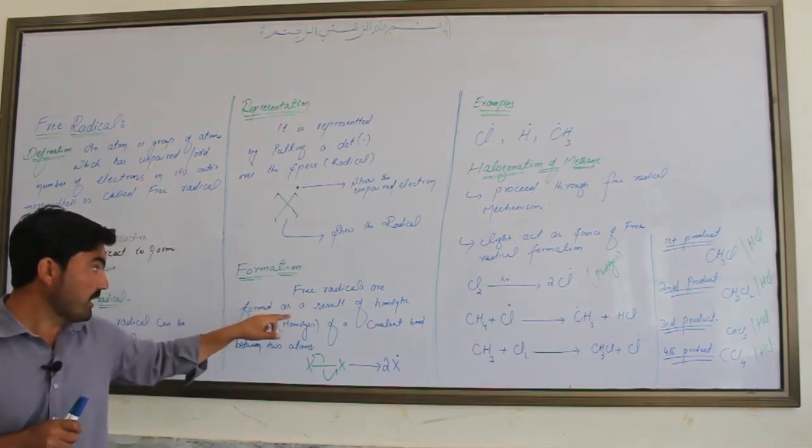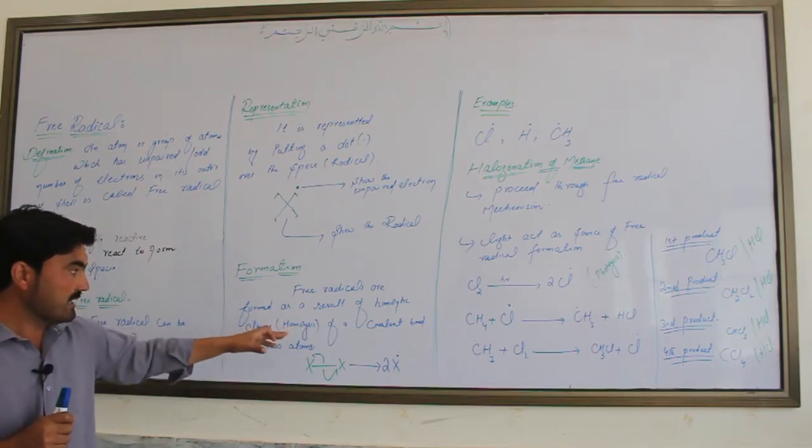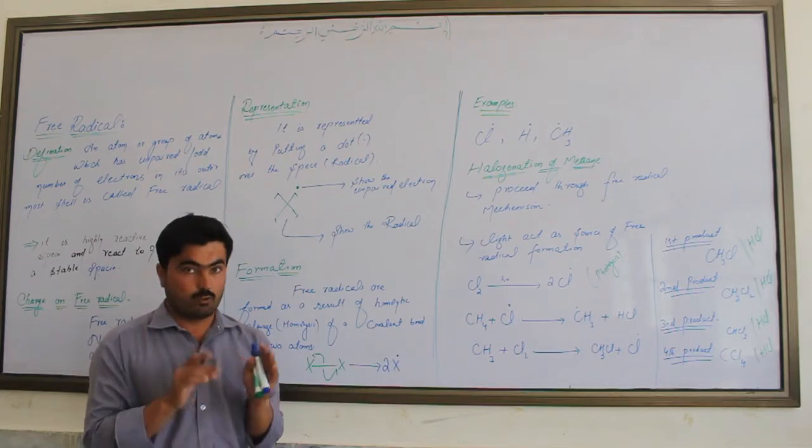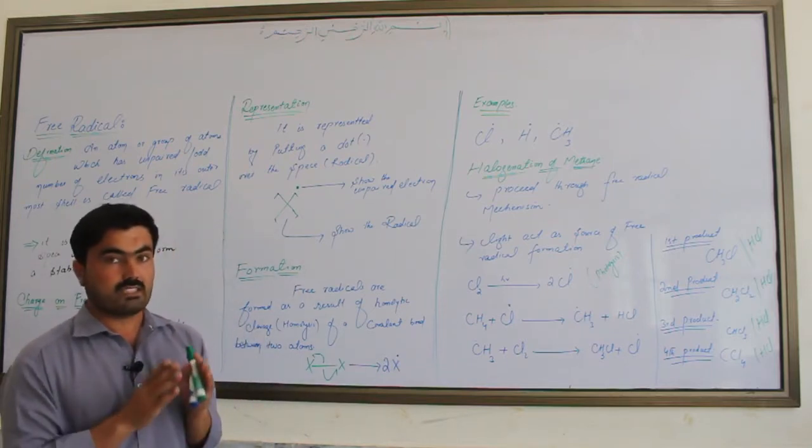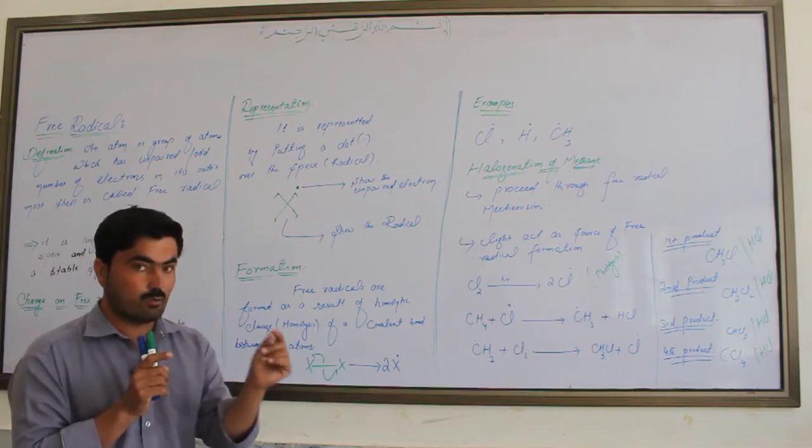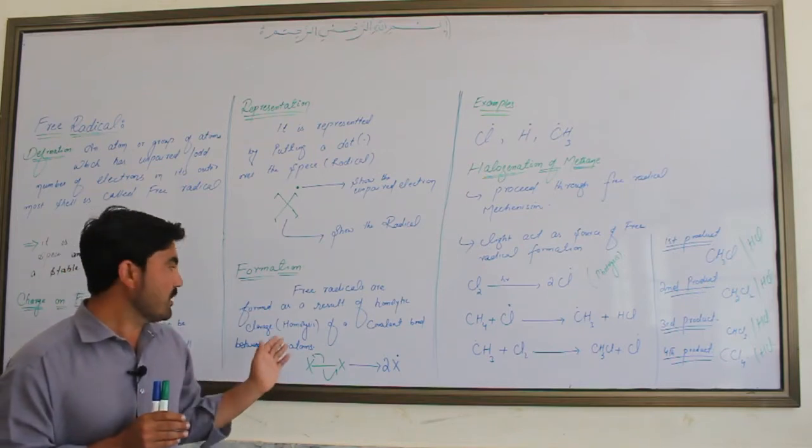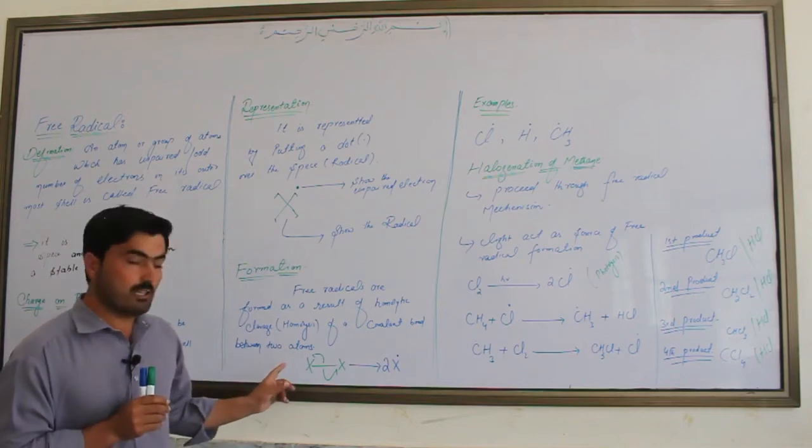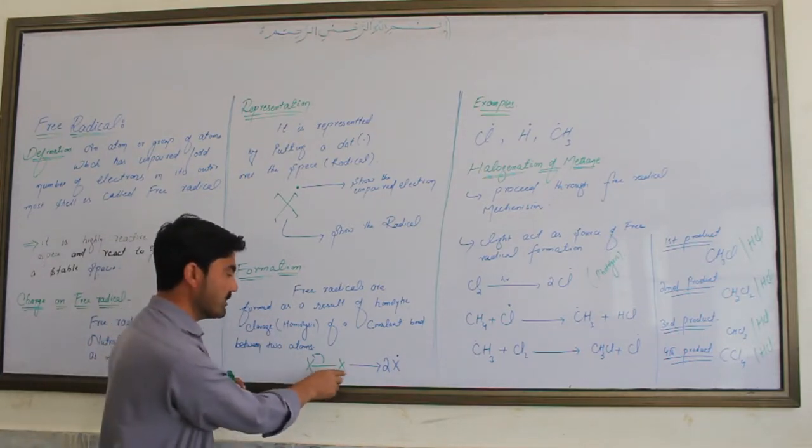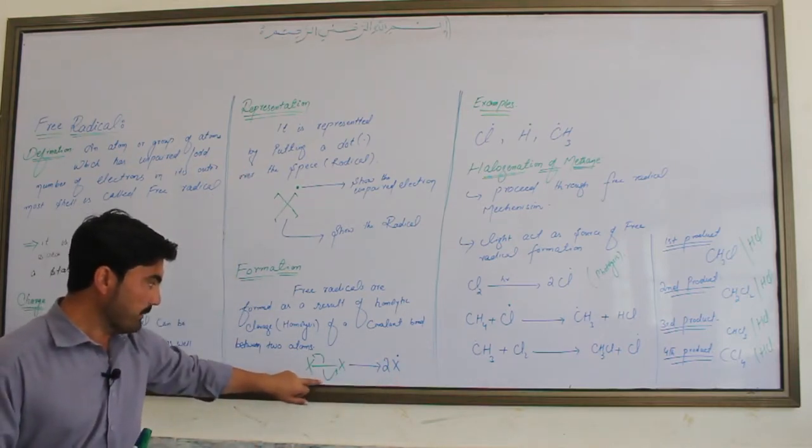Free radicals result from homolytic cleavage. In homolysis, the covalent bond between two atoms breaks such that each atom gets one electron from the shared pair. When the bond breaks up, each electron goes to a different atom. The result is free radicals formed through homolytic cleavage.